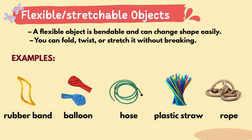Flexible and stretchable objects. A flexible object is bendable and can change shape easily. You can fold, twist, or stretch it without breaking. Examples: rubber band, balloon, hose, plastic straw, and rope.